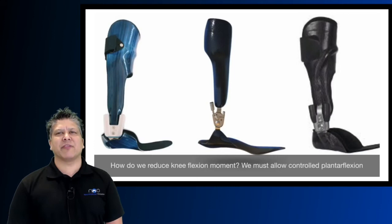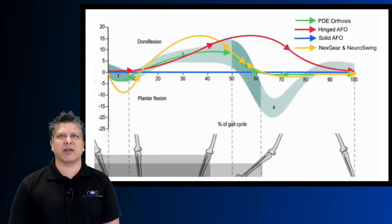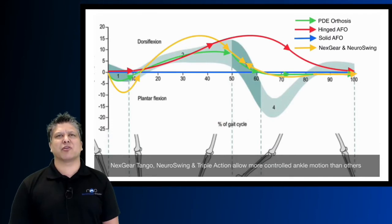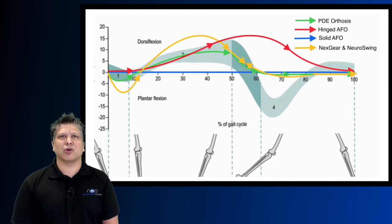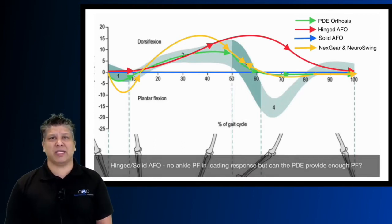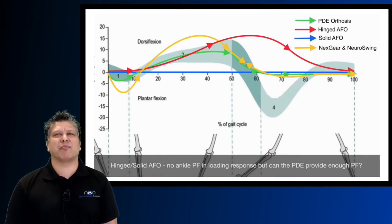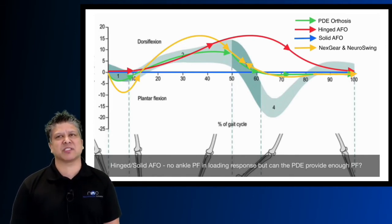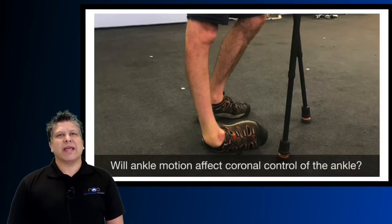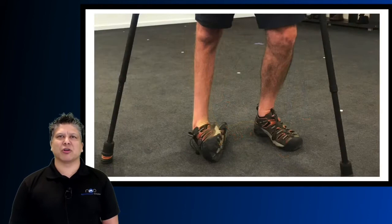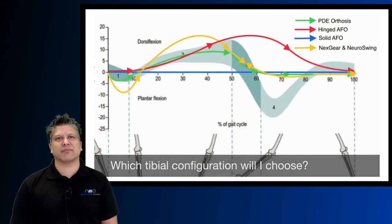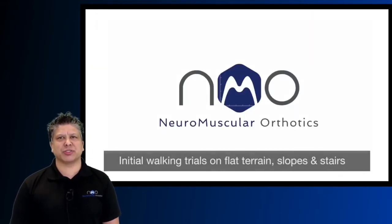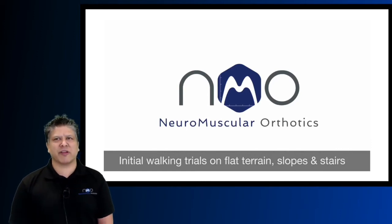To reduce the knee flexion moment we must allow controlled ankle plantar flexion. We now have a large collection of orthoses that allow that — the Neuro Swing, Next Gear Tango, and Becker Triple Action allow far more plantar flexion in loading response and far more controlled ankle dorsiflexion than your PDE. But can the PDE provide enough plantar flexion in loading response depending on spring stiffness? Will ankle motion affect the coronal control of Jonathan's ankle? Will the lateral malleolus be exposed to potential breakdown if we use an articular ankle design? And which tibial configuration will we choose?